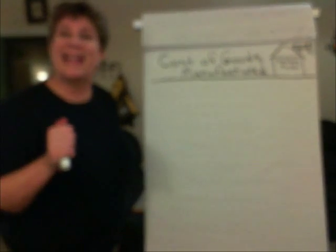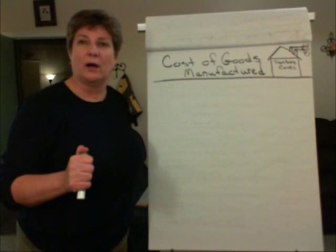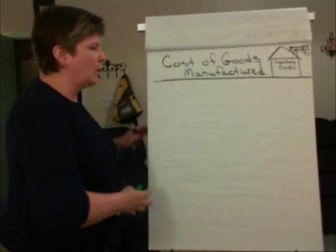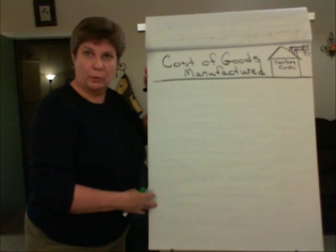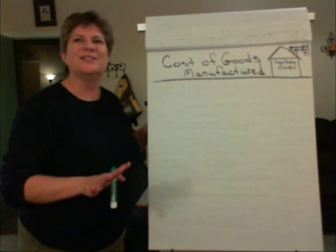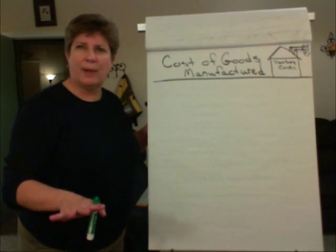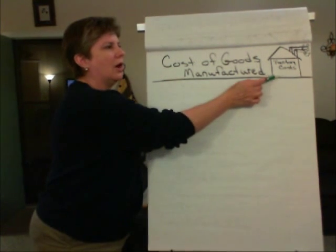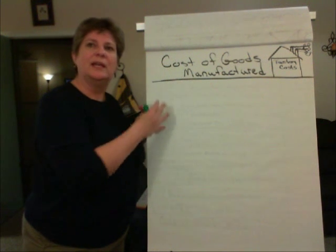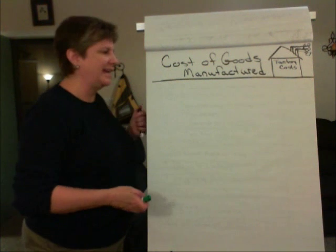The account that reflects the factory cost is work in process. This big schedule that we're about to prepare looks daunting — don't let it fool you, it's not really that hard. We just need to think about what's going on inside that factory, and then we assemble that information into a report form, a schedule that we present to management.